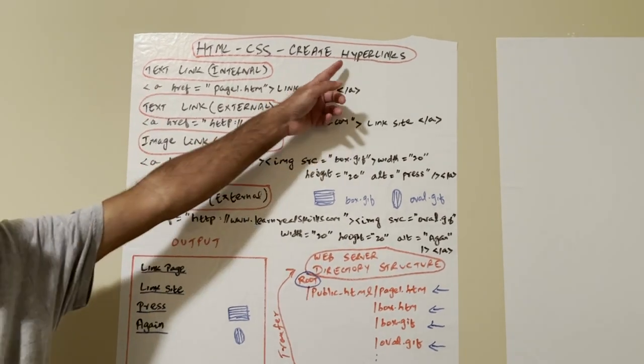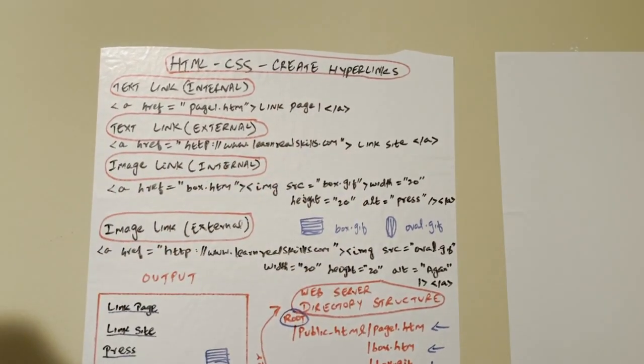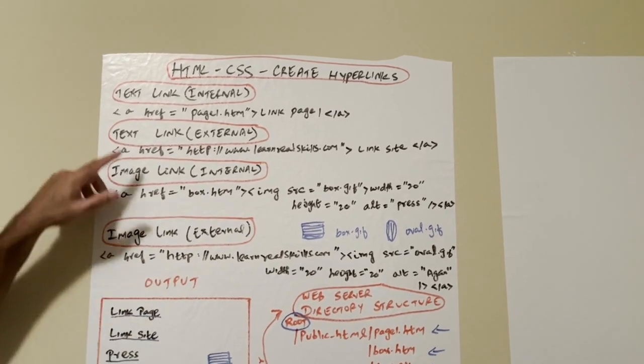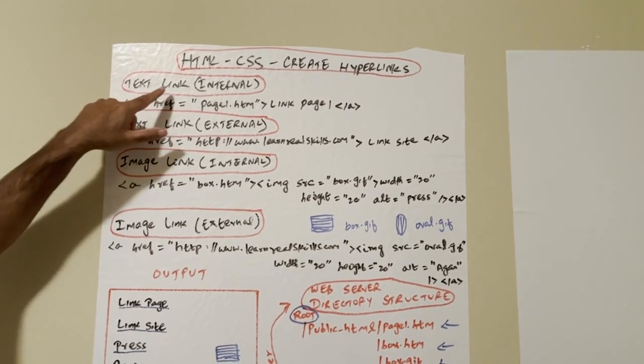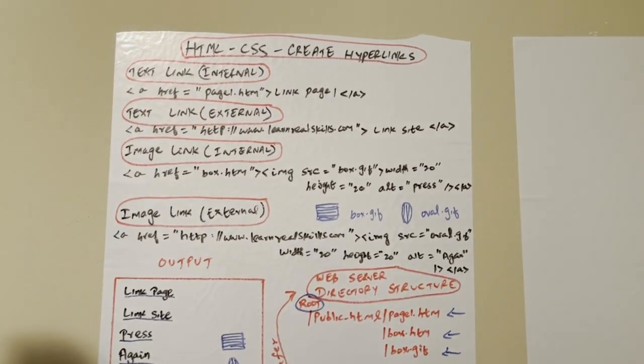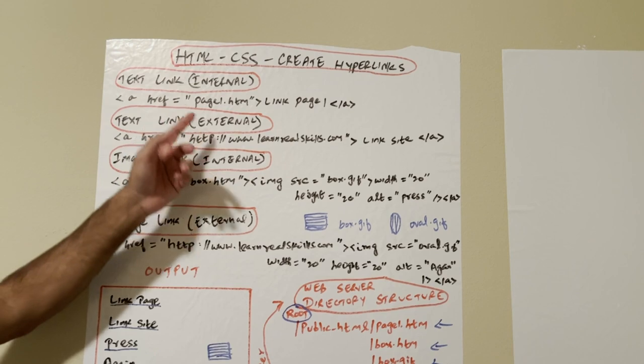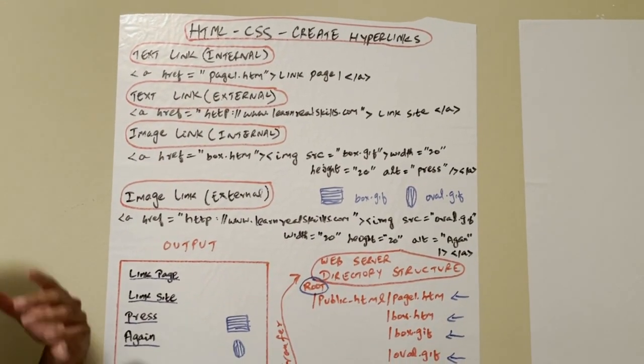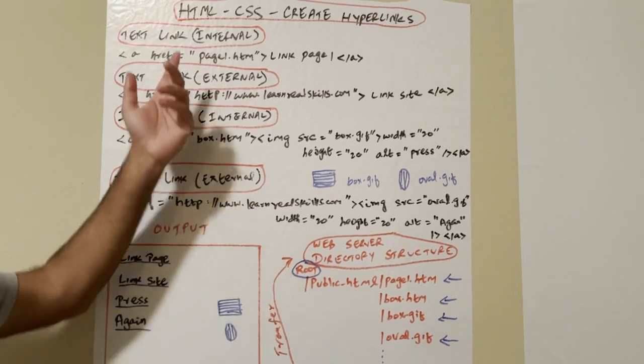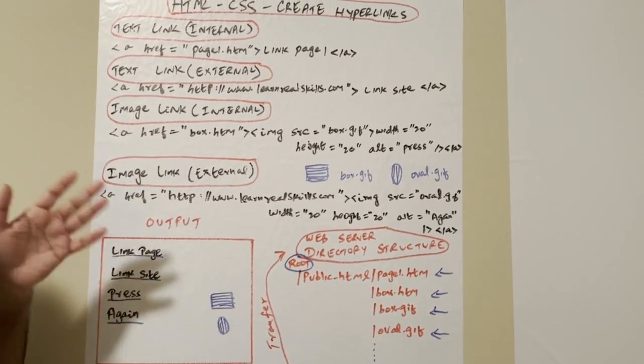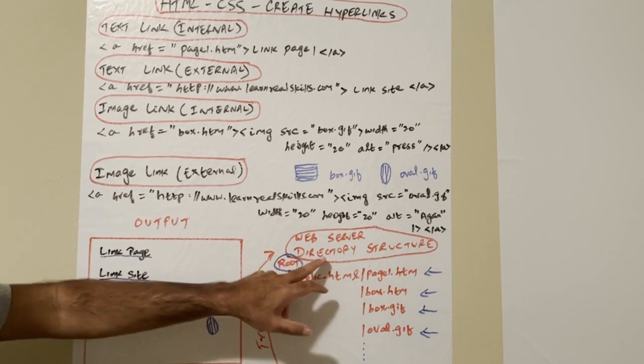This is one example, it's a text link, internal text link. I'll tell the difference between internal text link and external text link. External link, we link to another website. Internal link, we link to the objects within the website.